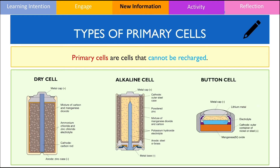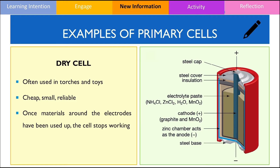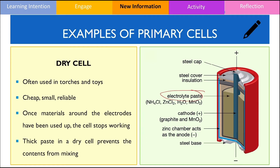Let's first discuss the dry cell. Dry cells are small batteries often used in torches and toys. Since it is a galvanic cell, the battery will be dead once the reactants around the electrodes have been consumed. Inside a dry cell, there is an electrolyte paste as you can see on the diagram. Please note the position of the electrolyte paste — it is found in between the sites of oxidation and reduction to prevent the reactants from mixing directly and avoid a direct redox reaction.